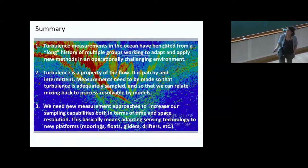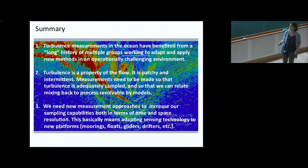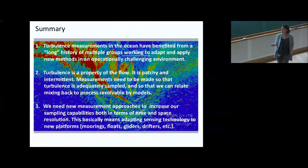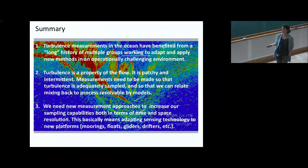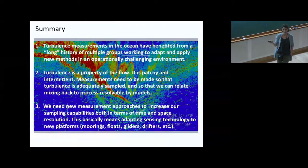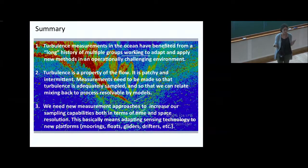So in conclusion, turbulence measurements in the ocean have benefited from the work of a large body of people and groups and basically adapting existing technologies to really challenging environments. Since turbulence is a property of the flow, it's patchy and intermittent and so increased measurements and improving our ability to measure is really important. And to do that we need new measurement approaches basically to increase our sampling capabilities. And the community as a whole is working on that effort. So I'm done.